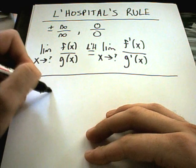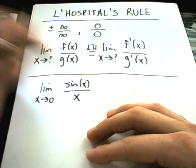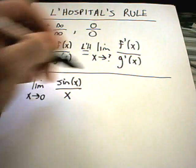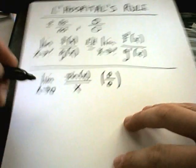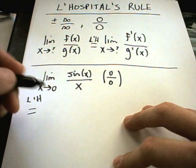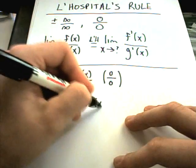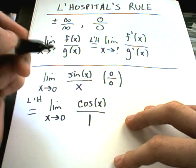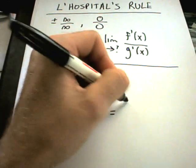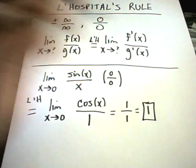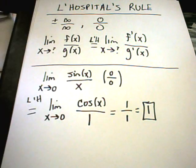Let's do some examples. The limit as x goes to zero of sin(x) over x. If you plug in zero, you get sin(0) which is zero on top and zero on the bottom, so I can use L'Hôpital's Rule. I'll get the limit as x approaches zero of the derivative of sine — which is cos(x) — divided by the derivative of x, which is one. Plugging in zero: cos(0) is one, divided by one, gives the answer one. And indeed, the limit as x goes to zero of sin(x)/x equals one.